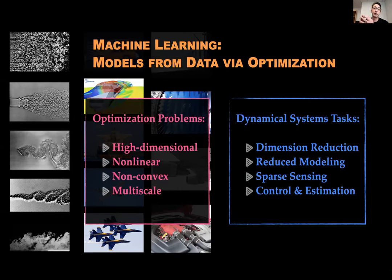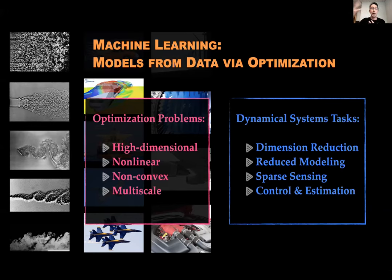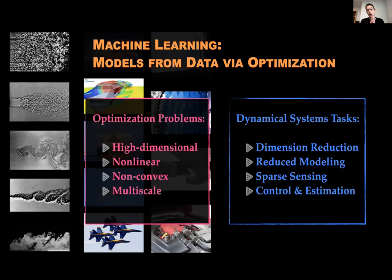Today I'm going to talk specifically about how machine learning can be used for dynamical systems modeling. I'm going to give examples from fluid mechanics — my passion — but this also applies to neuroscience, epidemiology, climate science, and pretty much any dynamical system that's high dimensional, nonlinear, multi-scale, that you want to control and for which you have limited sensors and actuators. Our dynamical systems tasks include dimensionality reduction: a fluid flow might need a billion degrees of freedom in a computer, or your brain has 100 billion neurons — how do you distill out the key coherent structures that actually matter?